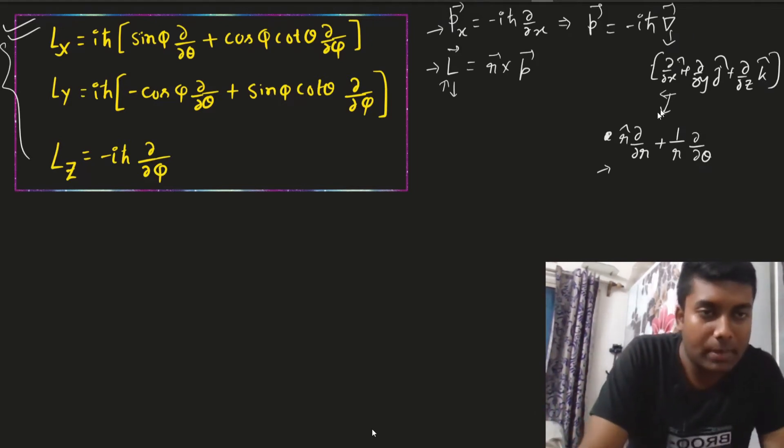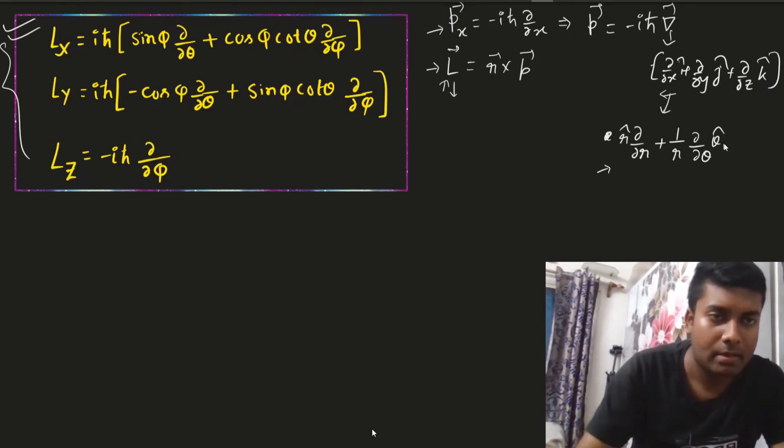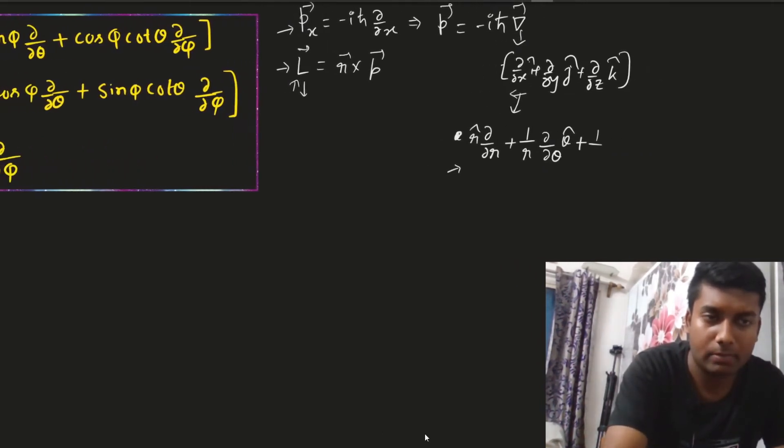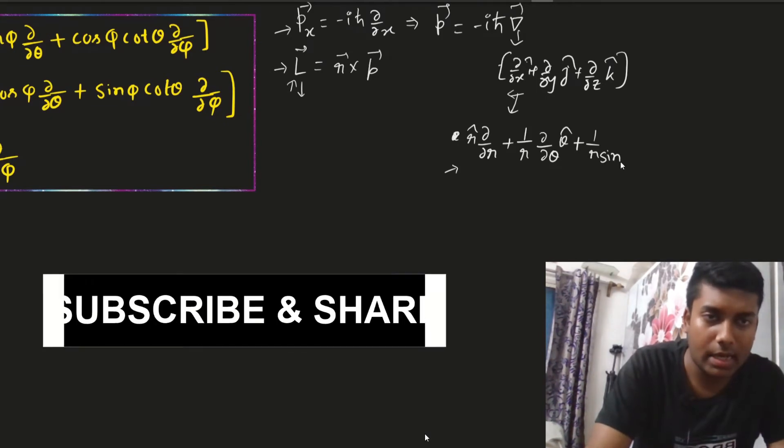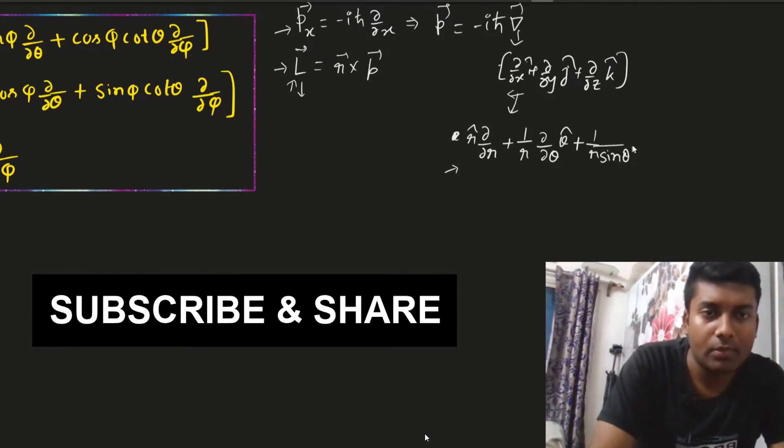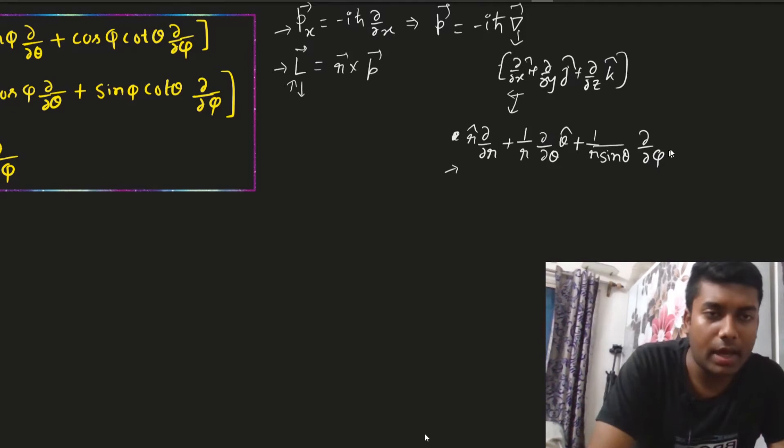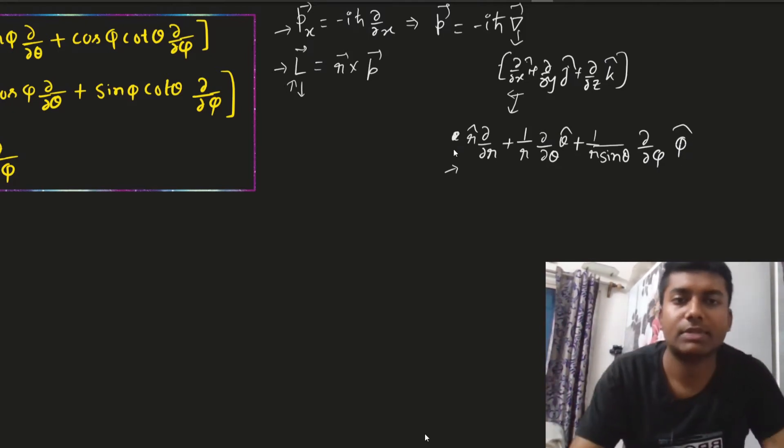So 1 by R del del theta theta cap plus 1 by r sin theta del over del phi phi cap. So r theta phi cap, this is the expression of gradient operator.